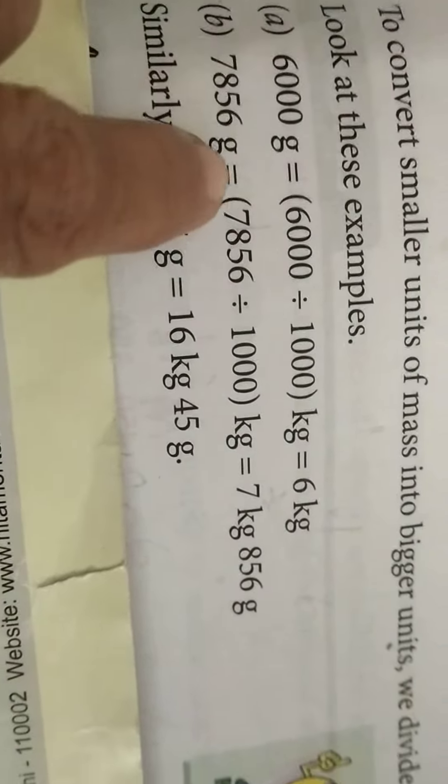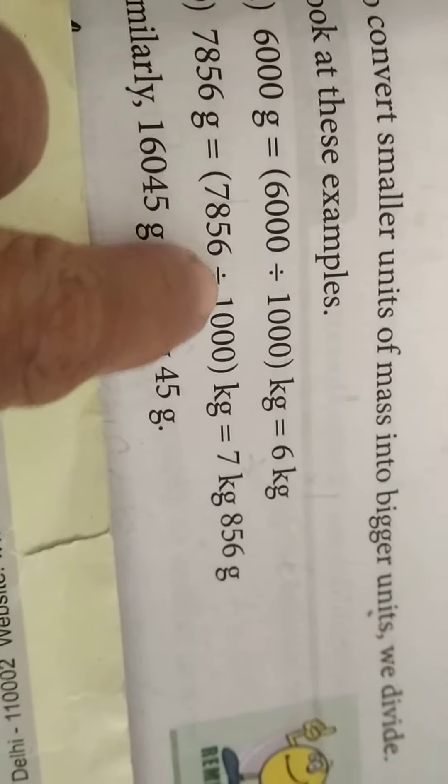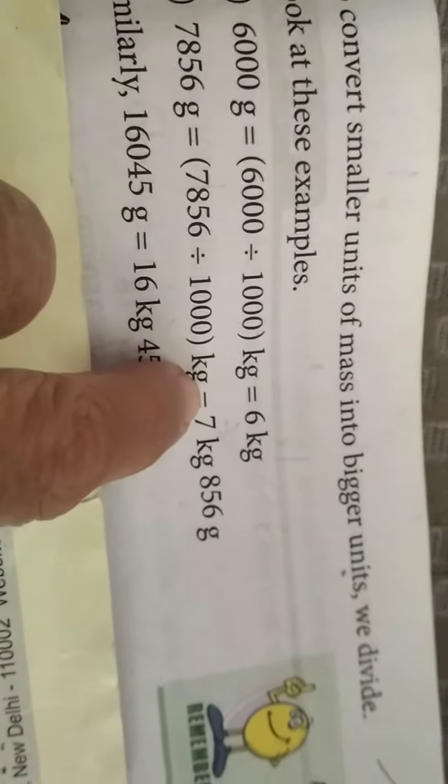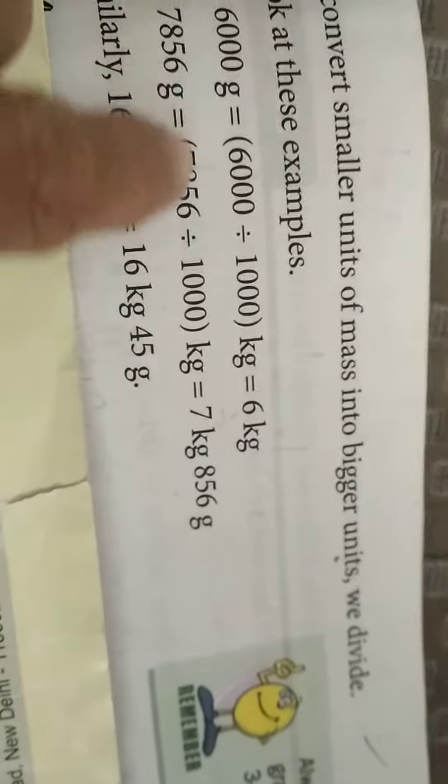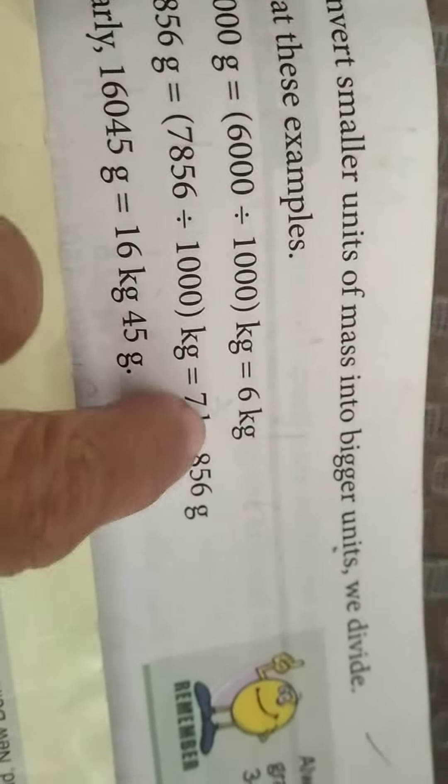7,856 grams equals 7,856 divided by 1000 grams. By dividing, we get 7 kg and 856 grams.